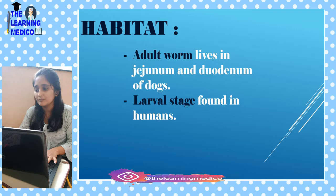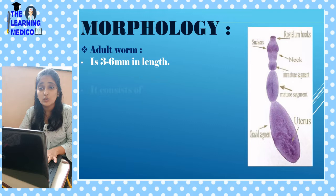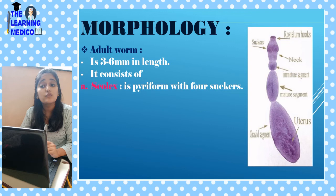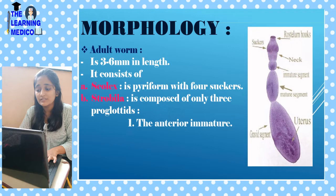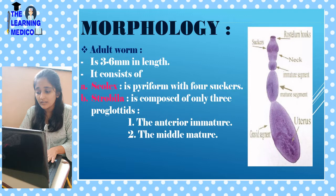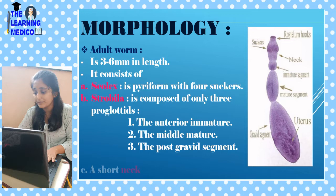Morphology. The adult worm is 3 to 6 mm in length. It has a scolex, which is pyriform, and it has 4 suckers. The strobila is composed of only 3 proglottids: the anterior immature, the middle mature, and the posterior gravid segment. You can see all the markings on the diagram. It also has a short neck.